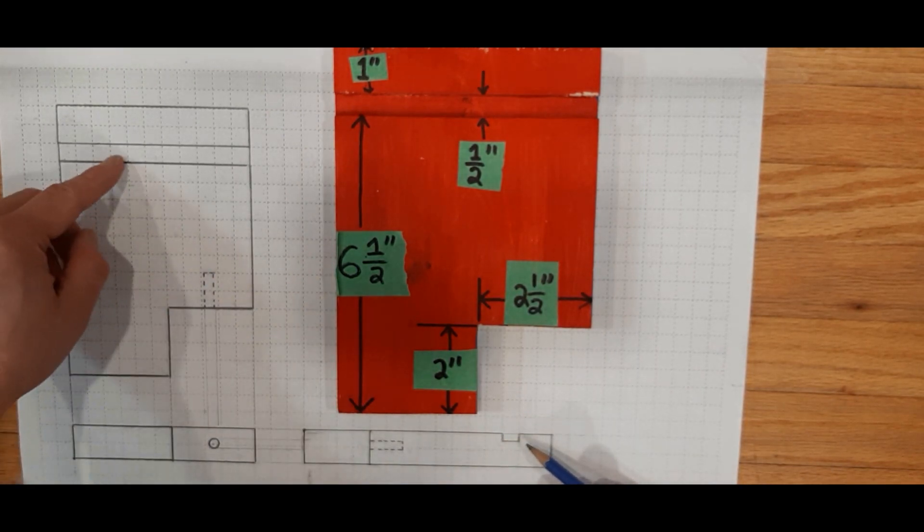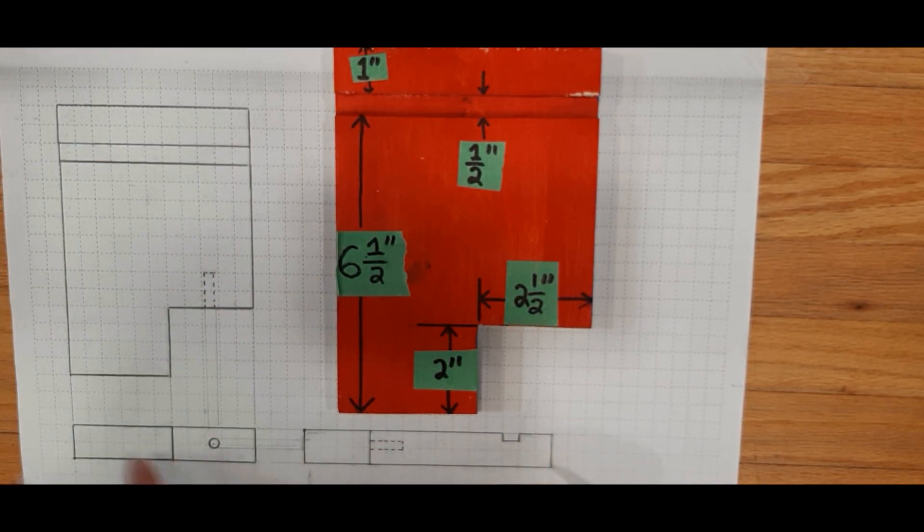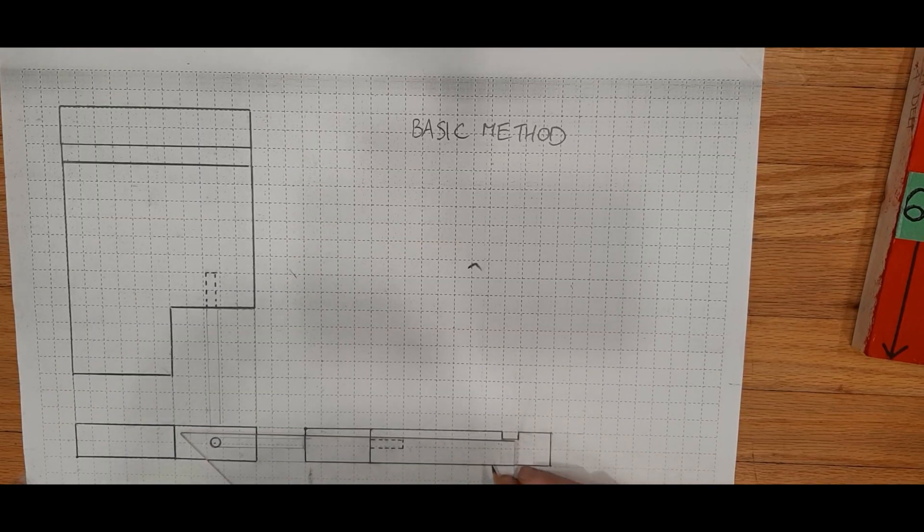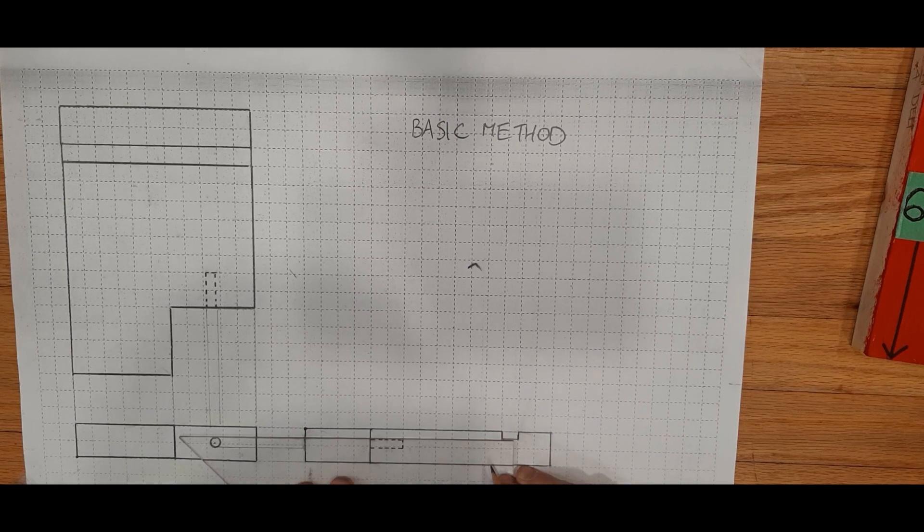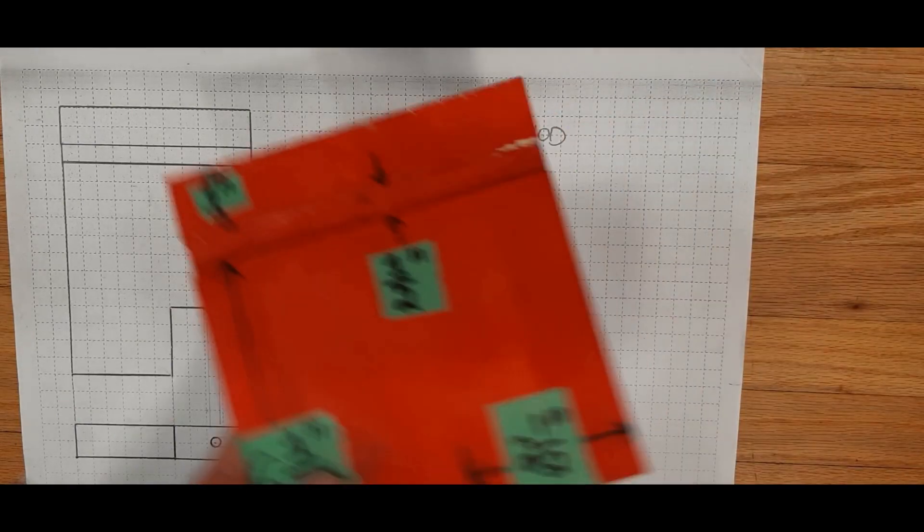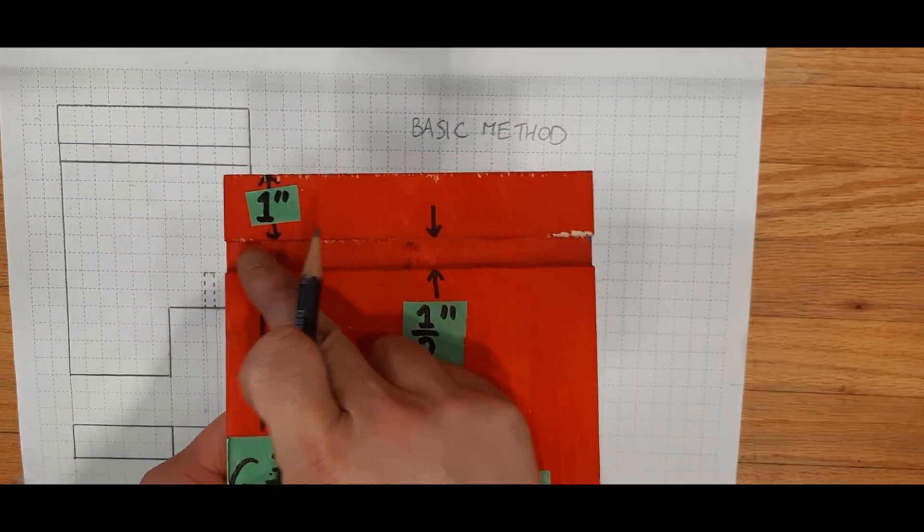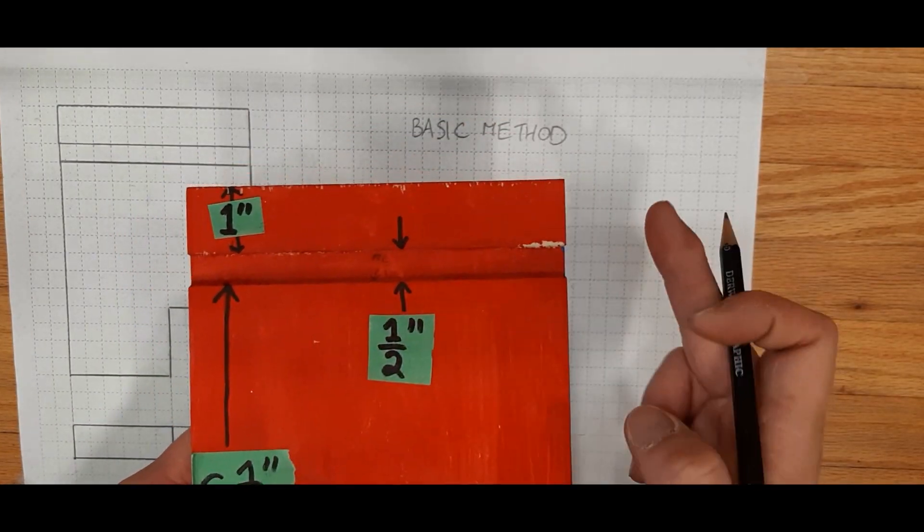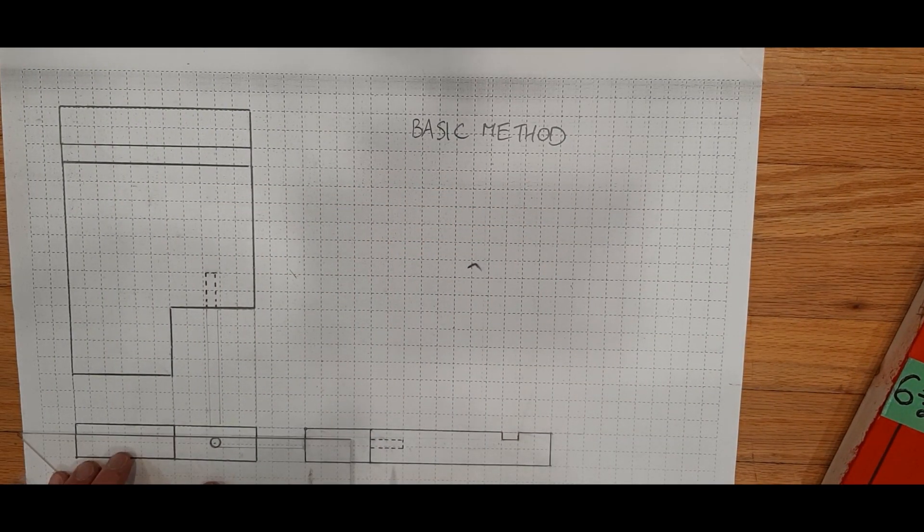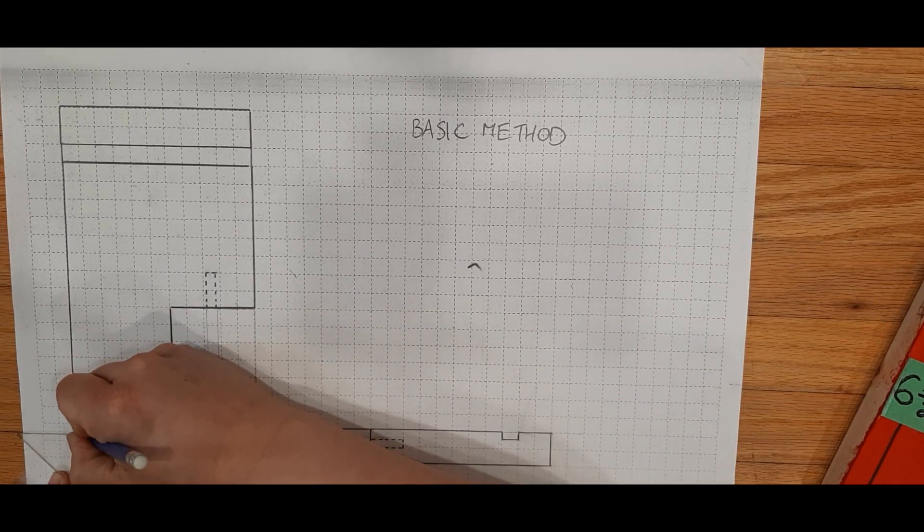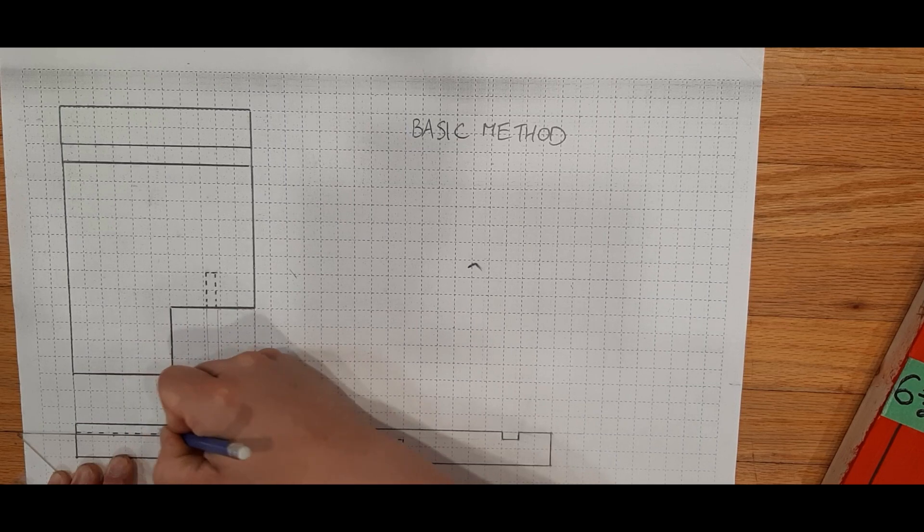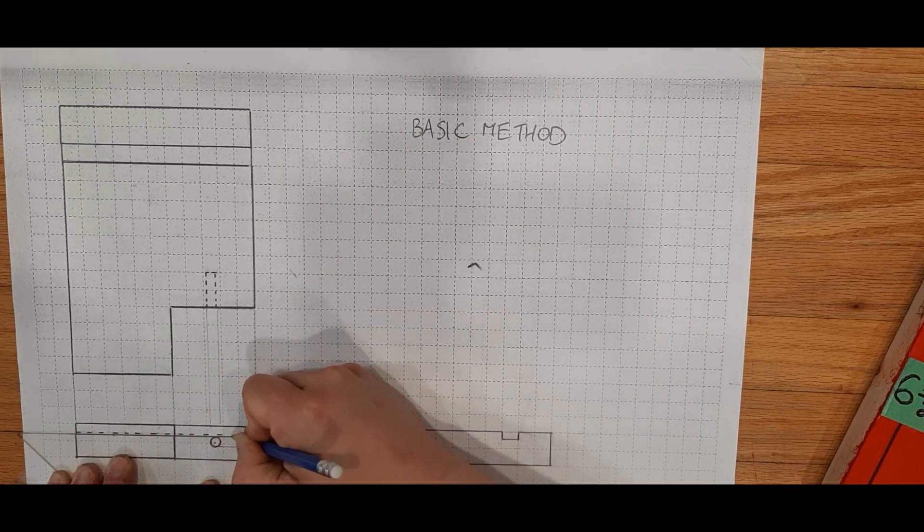Since we already have the slot in these two views, we only need to do the slot on our front view. Find the bottom of the slot on the right view, lightly draw that projection line. And since the slot runs all the way through from the furthest right point to the furthest left point, we're going to do little dotted lines all along the top of that front view.